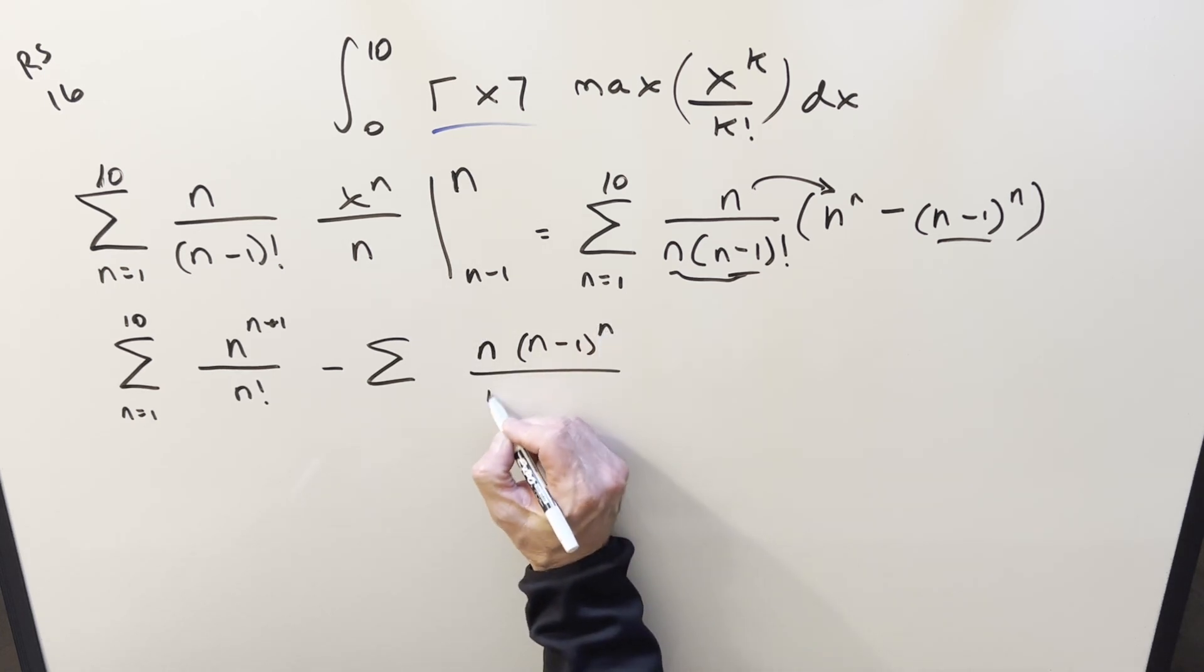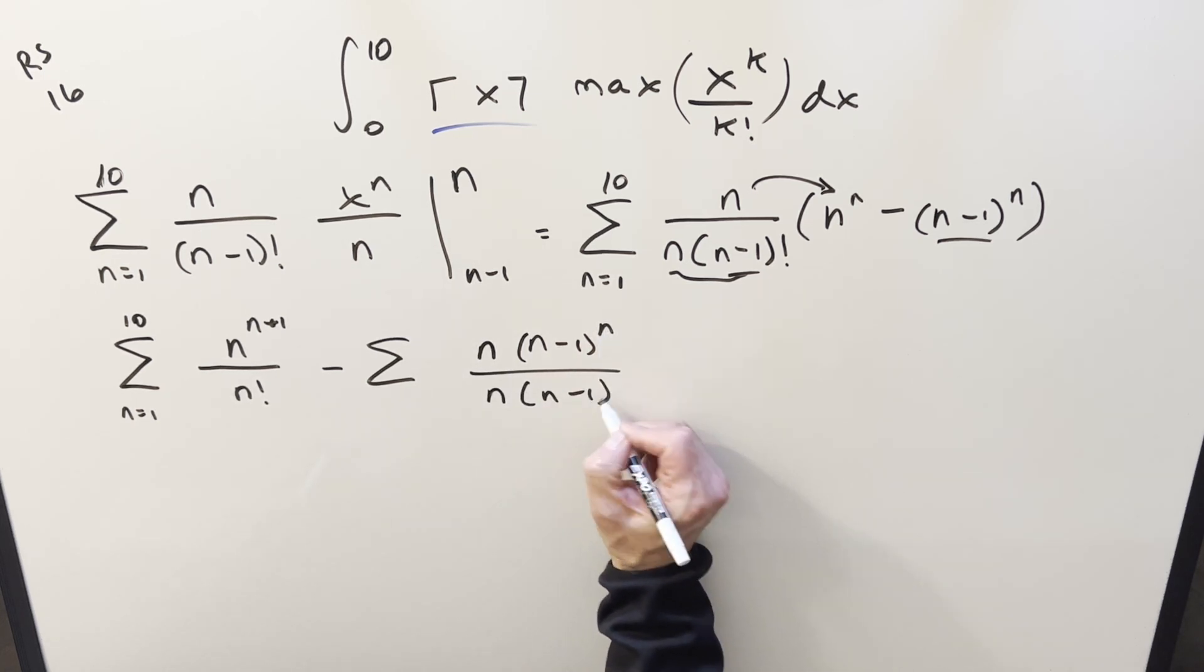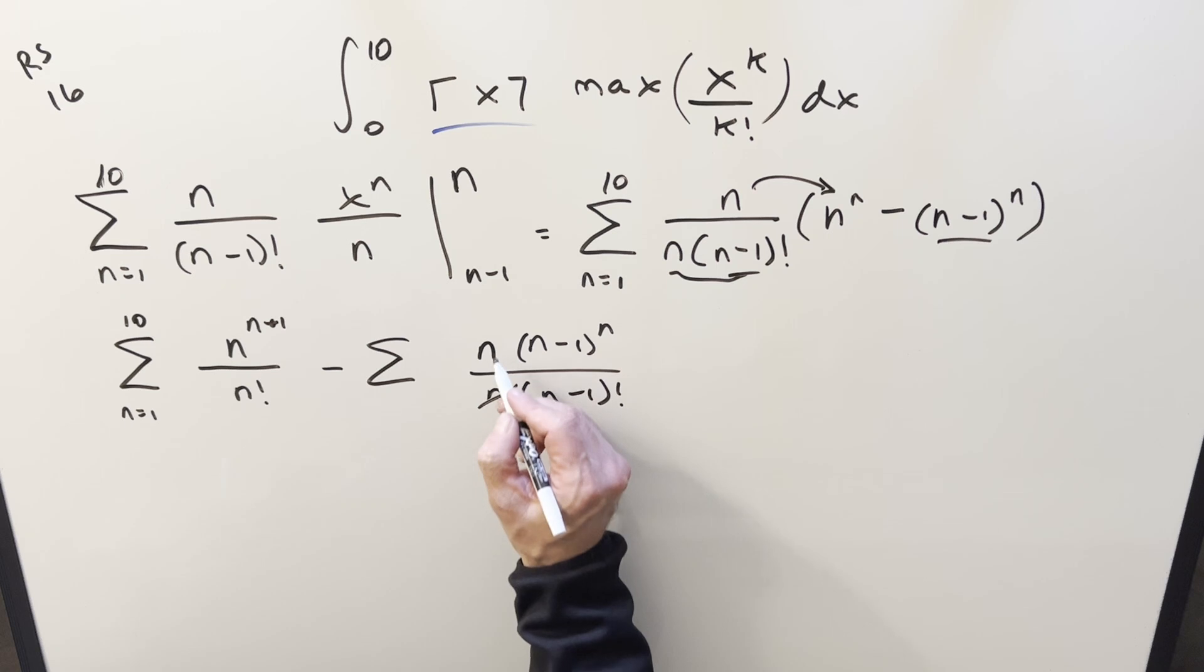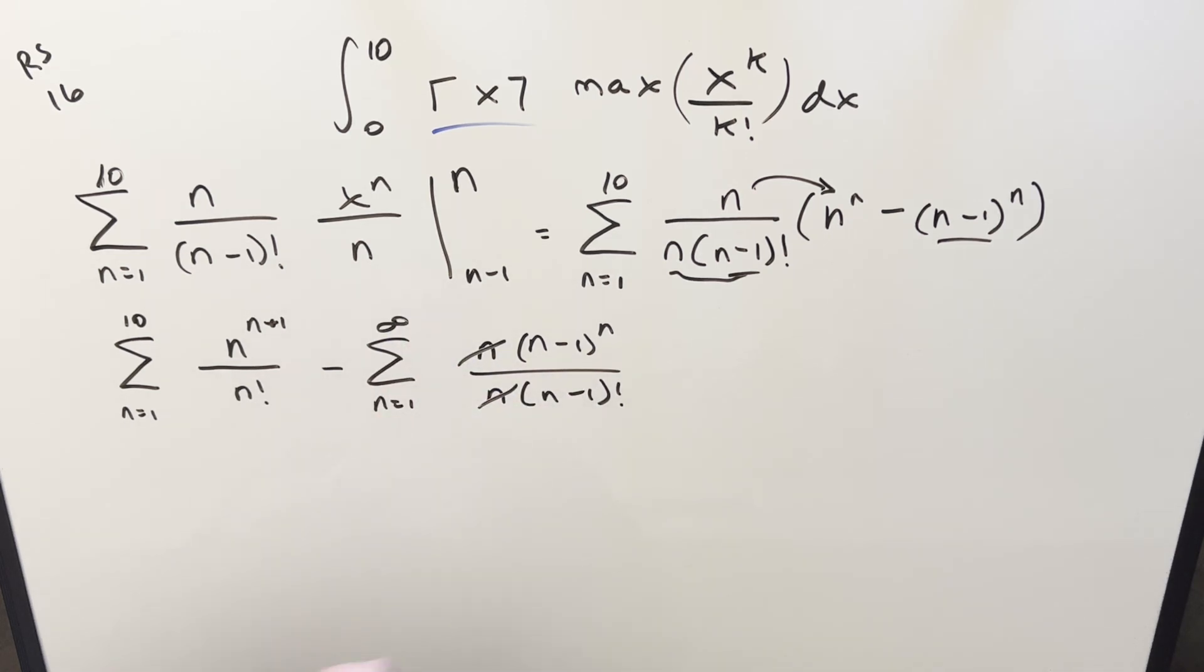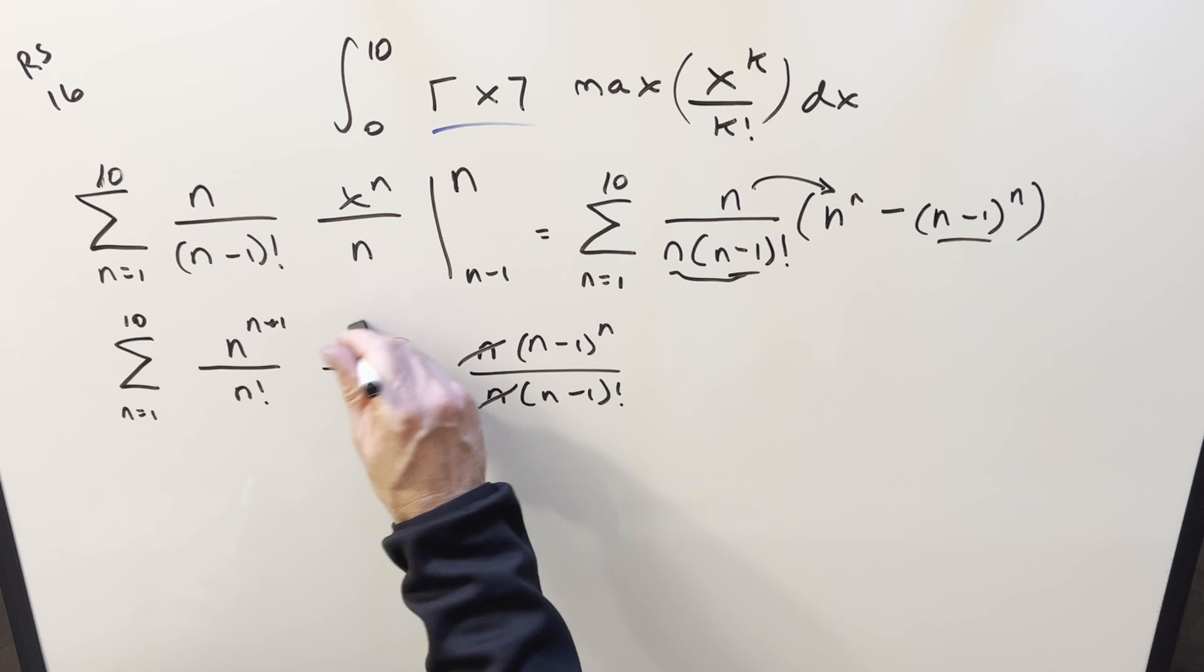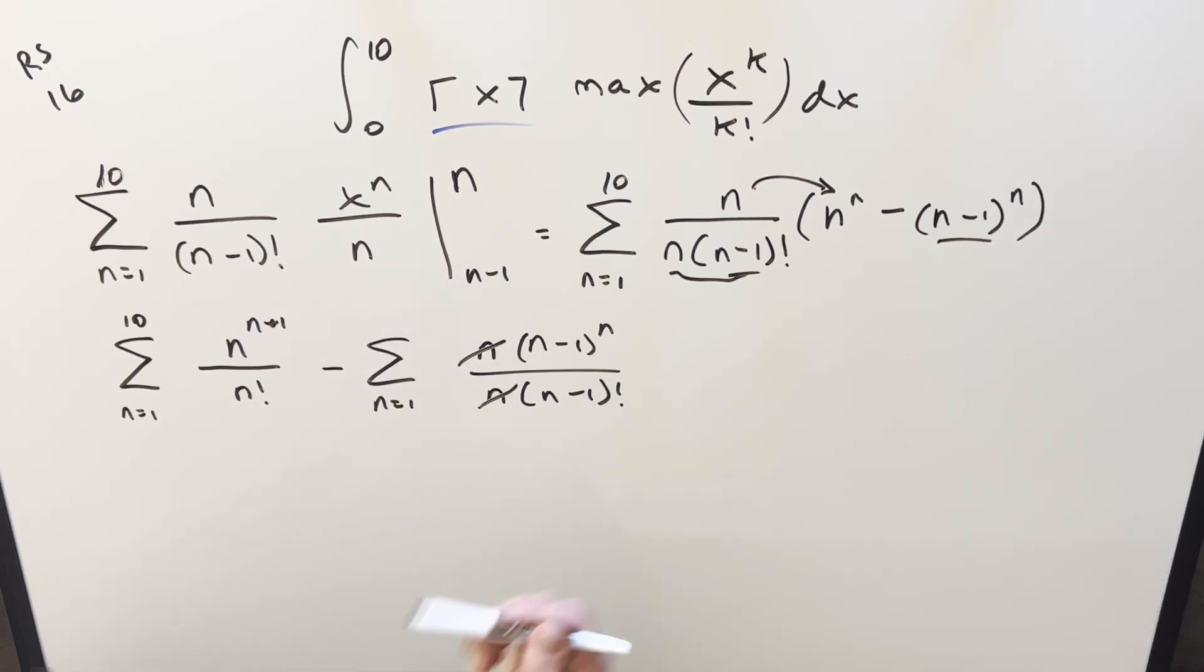And then the denominator, now we've got n to the n minus 1 factorial. Now I can cancel out these n's. Maybe I could have done that a different way. I don't know. But I do know that this definitely doesn't go to infinity. I keep wanting to do that. I'm used to writing infinity there.